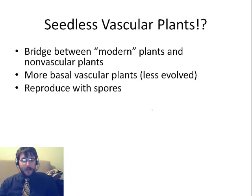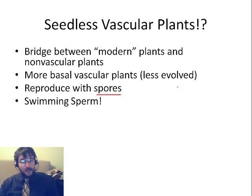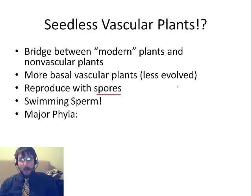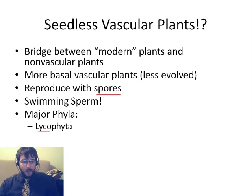Some of the things they have in common with non-vascular plants: they reproduce primarily with spores, and just like with the non-vascular plants, they have swimming sperm as well. There are four major phyla you need to know about: Lycophyta — the wolf plants — and Arthrophyta — the wrist or joint plants.